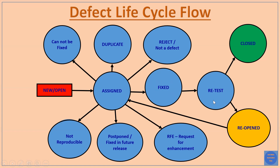After fixing, the tester retests the bug to verify whether it is fixed or not. If the bug is fixed, the tester changes the status of the defect to 'Closed'. If the tester finds that the issue still exists, they reopen the bug. Reopening means the bug goes back to the assigned developer, coming back to the 'Assigned' state.